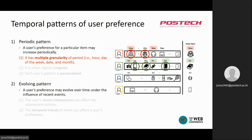In detail, firstly, periodic pattern has multiple granularities of period — that is, hour, day of the week, date, and month. For example, we may recommend a winter coat to user A in November because the user has been buying a winter coat around every November.